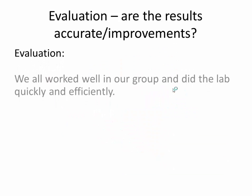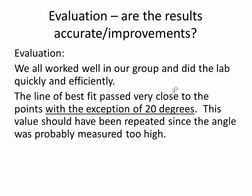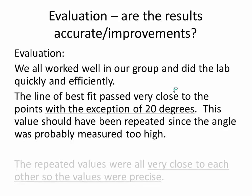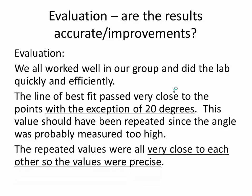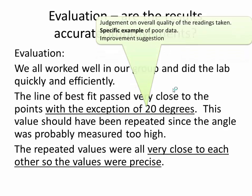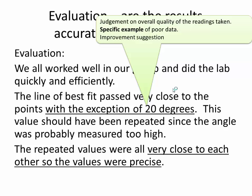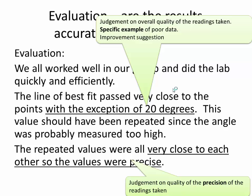A better example would give specific observations: 'the line of best fit passed very close to the points with the exception of 20 degrees.' The repeated values were all very close to each other, so the values were precise. Notice we've got a judgment on the overall quality of the results, a specific example of poor data is given, a suggestion for improvement is included, and a judgment on the precision of the readings taken.